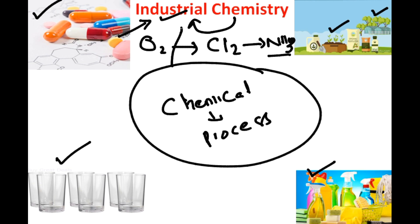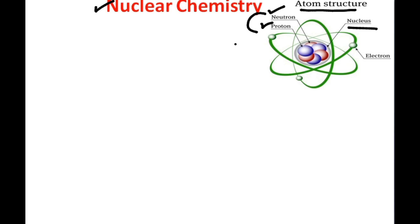Now we have nuclear chemistry. It is clear from the word 'nuclear' that there will be the study of the nucleus. Here you can see the structure of an atom where we study only the nucleus. In the nucleus we have neutrons and protons, and the collection of neutrons and protons is called nucleons.